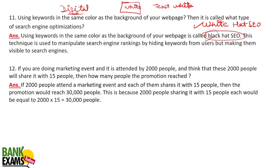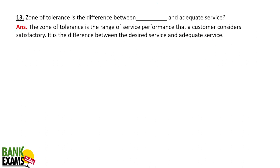If you are doing a marketing event attended by 2,000 people and those 2,000 people each share it with 15 people, your reach becomes 2,000 multiplied by 15 = 30,000 people. This is again a digital marketing concept.